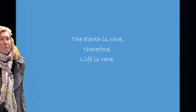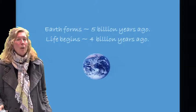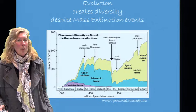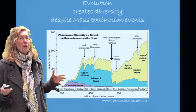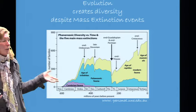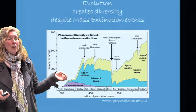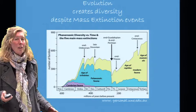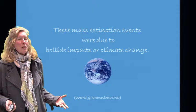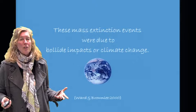The Earth is rare, therefore life is rare. The Earth forms approximately five billion years ago, and life begins approximately four billion years ago. Over eons of time, we see great diversity through evolution, despite five mass extinction events. Looking at the graph, we see an increase in diversity over time, despite those troughs of mass extinction events. These mass extinction events were generally due to natural causes — bolide impacts or climate change.